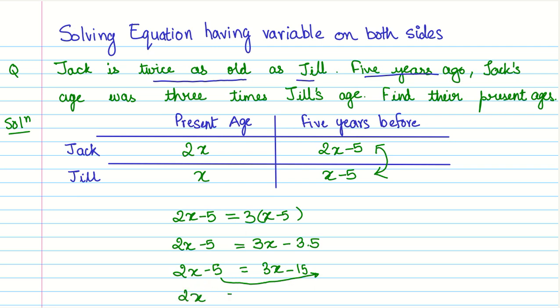So 2X equals 3X minus 15 plus five because transposition changes the sign of the number. And now, we transpose this 3X towards here. So we have 2X minus 3X equals this minus 15 plus five minus 15 plus five. Or essentially, it is five minus 15. Now, 2X minus 3X gives us minus X, that is minus 1X. And we have minus 15 plus five is minus 10.